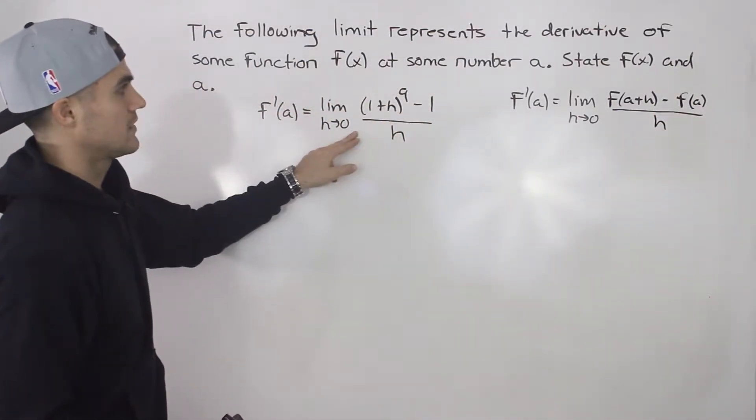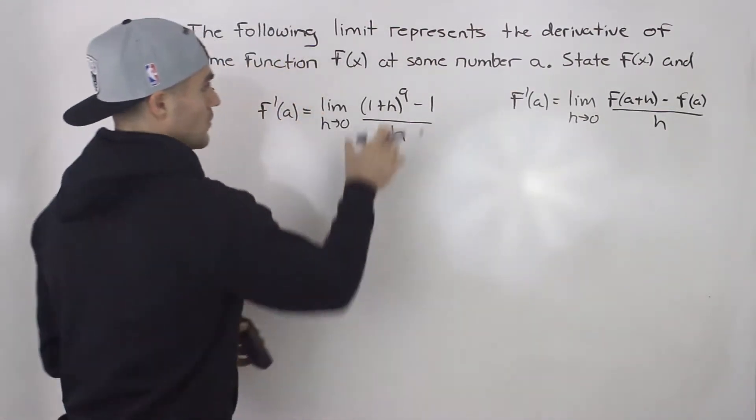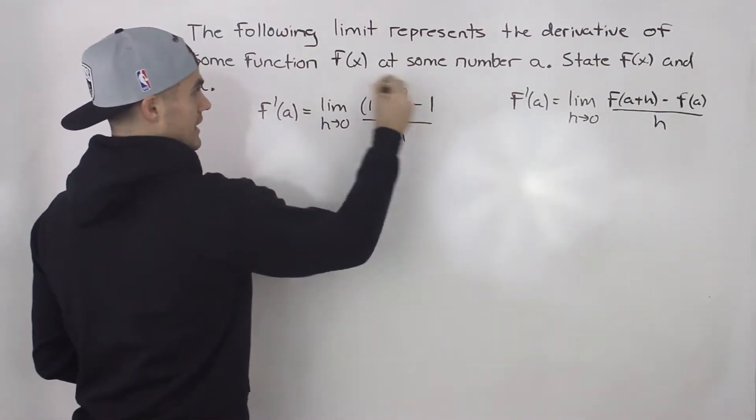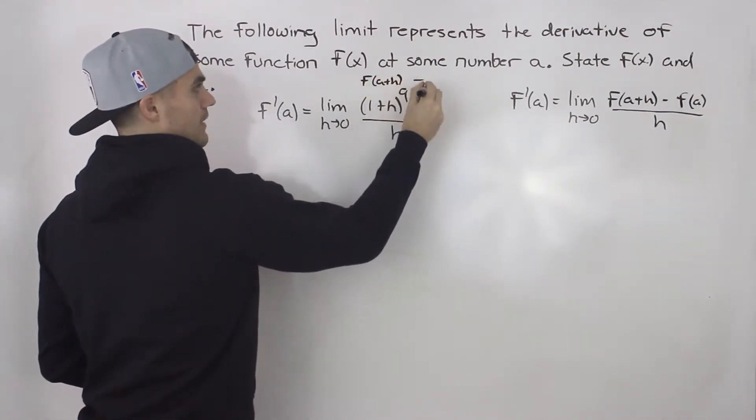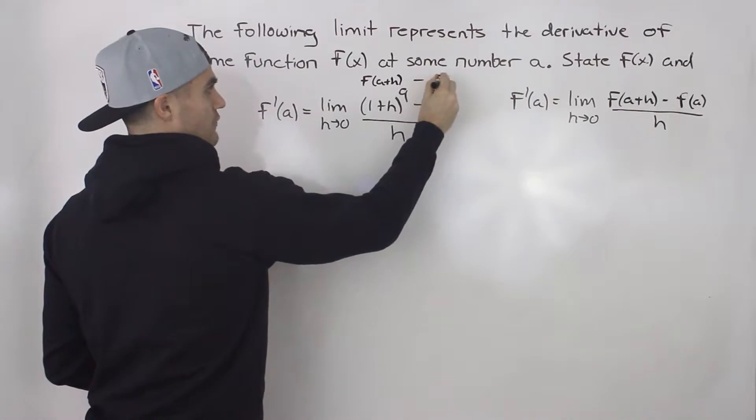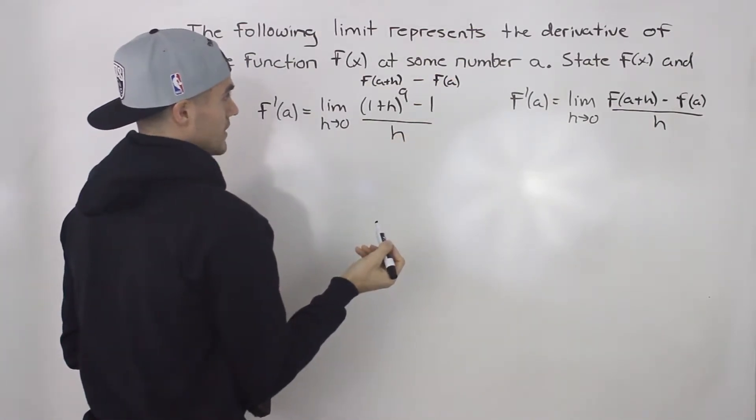And notice that this limit here is very similar to this format. So this (1+h)^9, this is like your f(a+h). And then this minus 1 here is like your f(a). And then it's all over h.